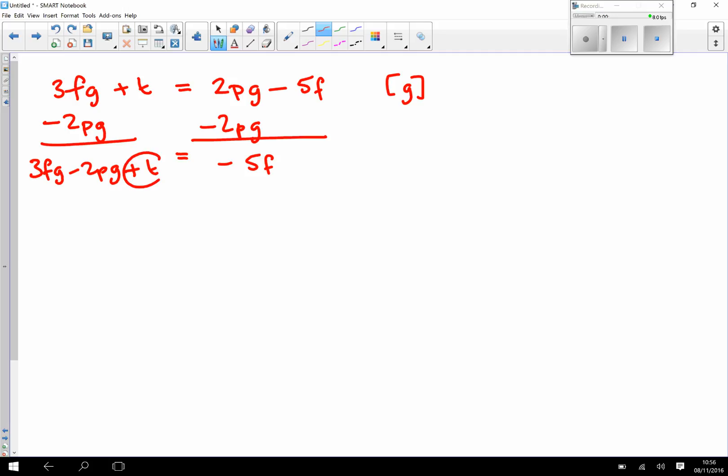And now I need to get rid of this positive T from this side of the equation. So I'm going to subtract T from both sides. This leaves me with, on the left-hand side of the equation, 3FG minus 2PG. And on the right-hand side of the equation, I've got negative 5F minus T.